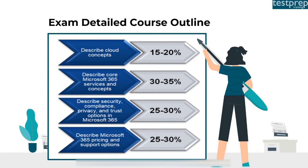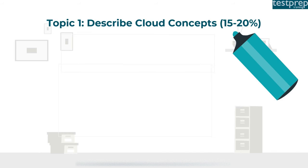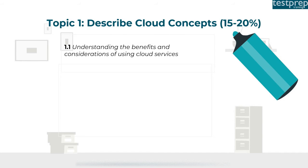The exam detailed course outline is as follows. First, describe cloud concepts, which comprises 15 to 20 percent of the exam. Second, describe core Microsoft 365 services and concepts, which comprises 30 to 35 percent. Third, describe security, compliance, privacy, and trust options in Microsoft 365, comprising 25 to 30 percent. Fourth, describe Microsoft 365 pricing and support options, comprising 25 to 30 percent.